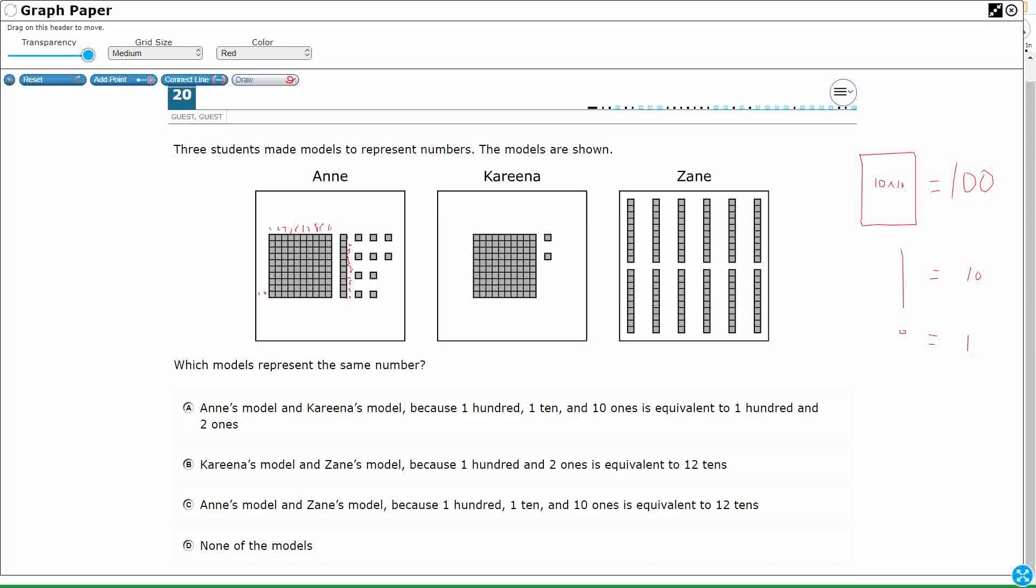So Anne looks like she's going to have a pretty straightforward number here. I'm just going to show them as an addition sentence. So I've got 100 plus this, which is 110. And I've got a whole bunch of ones. 1, 2, 3, 4, 5, 6, 7, 8, 9, 10. Oh, interesting.